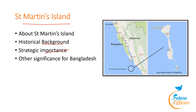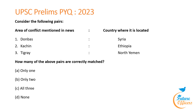The island's proximity to Myanmar adds significance in regional security dynamics. For Bangladesh, it is part of its exclusive economic zone, rich in marine resources like fish, oil and gas, and is a key tourist destination with coral reefs and diverse marine life. A UPSC Prelims 2023 question on pairs of conflict areas and countries — Donbas/Syria, Kachin/Ethiopia, Tigray/North Oman — answer: none of the pairs are correctly matched.